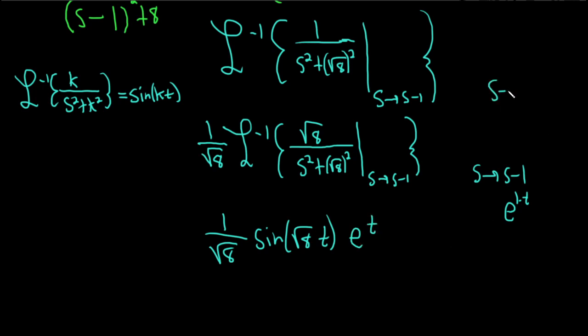If you go from s to s minus 3, you get e to the 3t. If you do a plus 3, you get negative 3t. That's the final answer. The shift gives you an exponential.